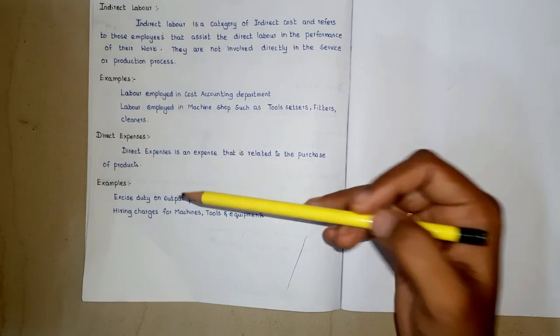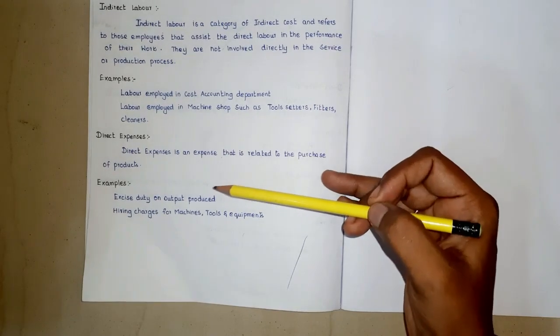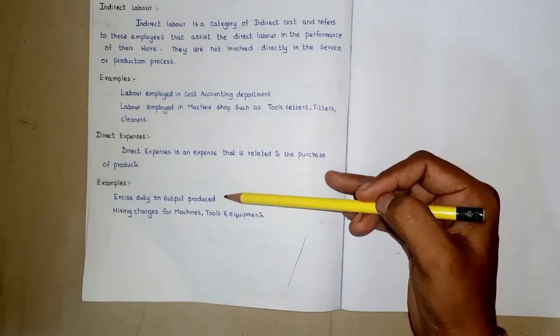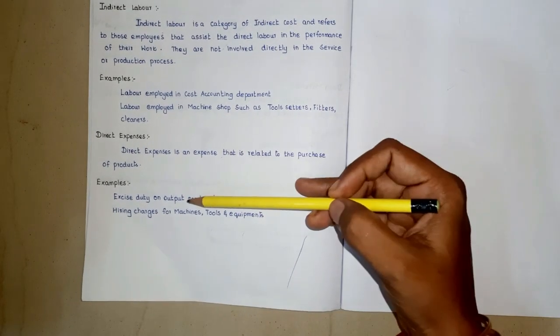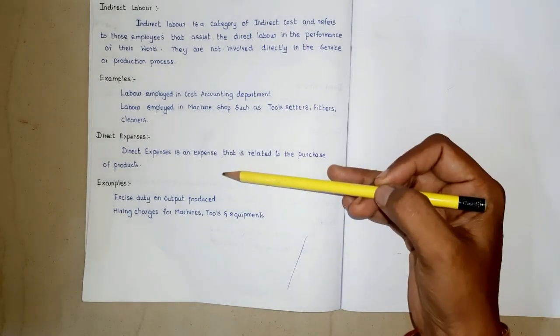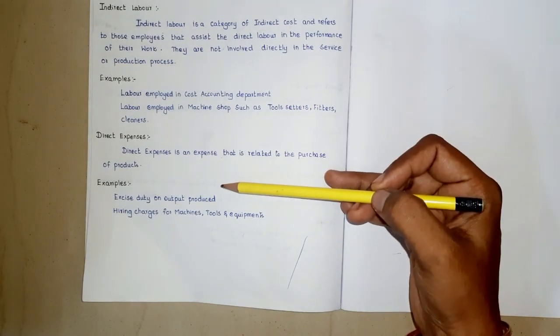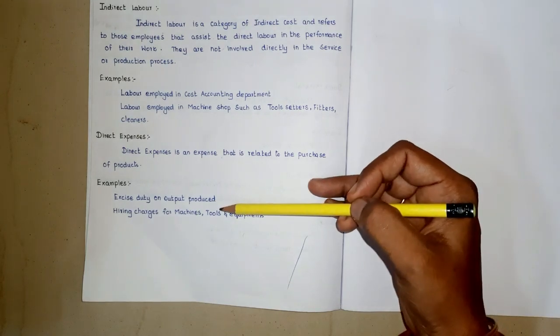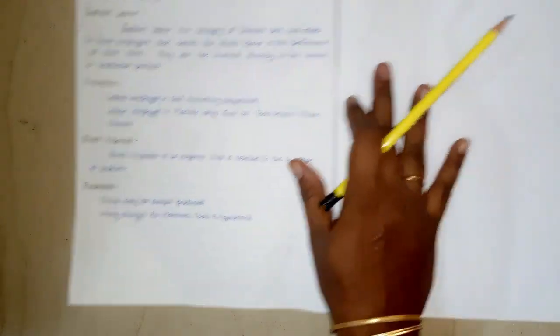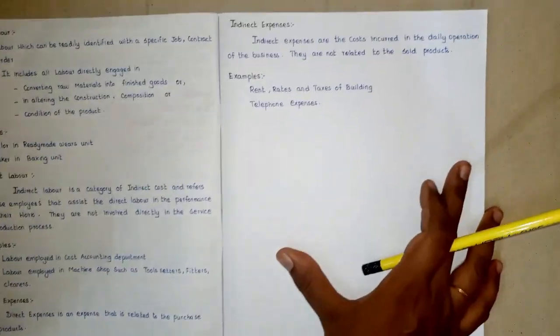Excise duty on output produced. Excise duty is a form of tax imposed on goods for their production, licensing, and sale. An indirect tax paid to the government of India by producers of goods. So this is a direct expense.